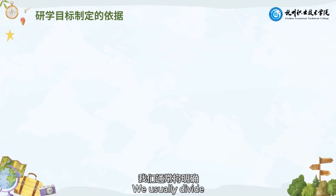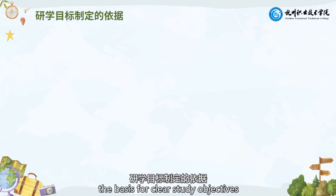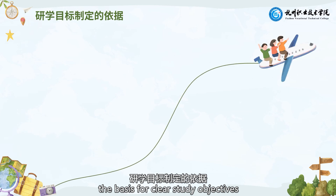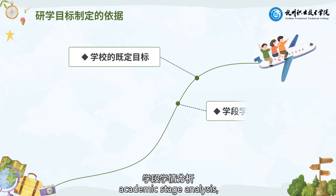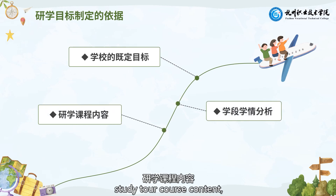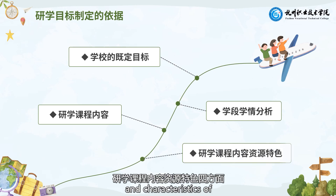We usually divide the basis for clear study objectives into four areas: the school's established objectives, academic stage analysis, study tool course content, and characteristics of study tool course content resources.